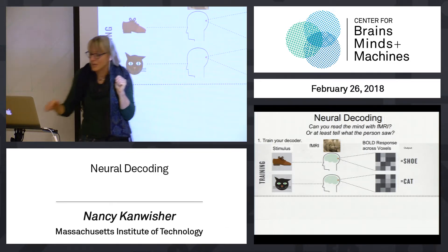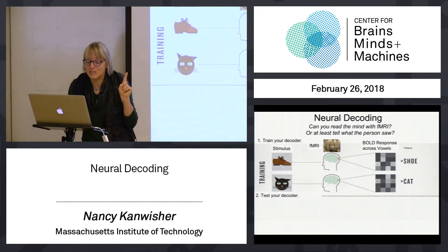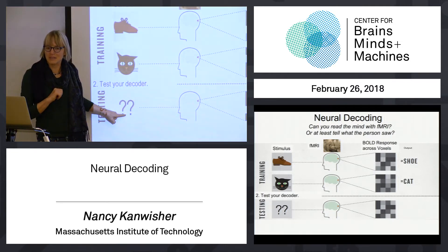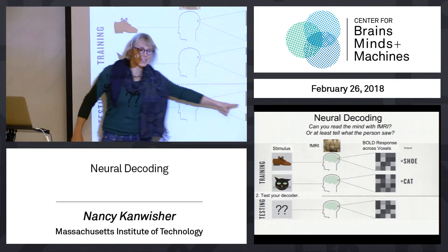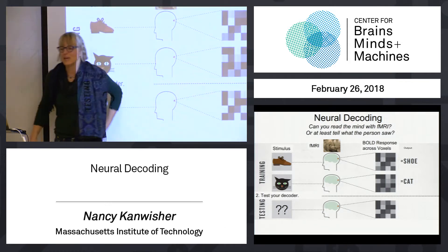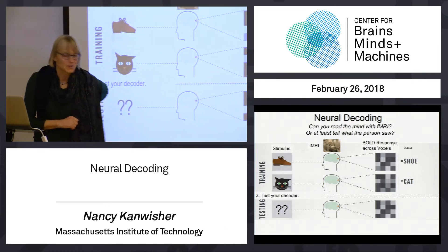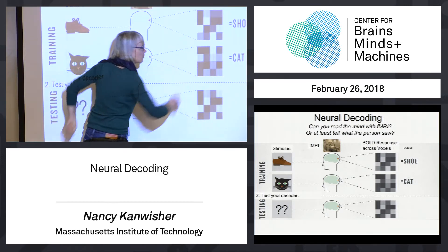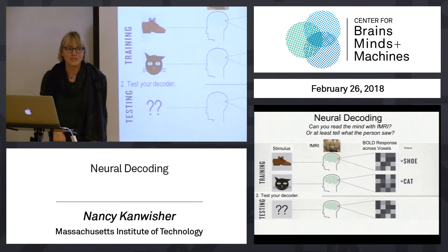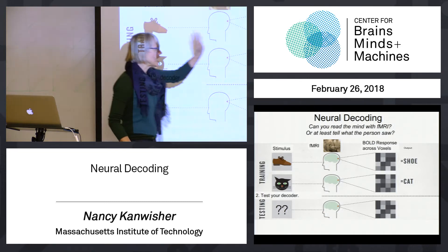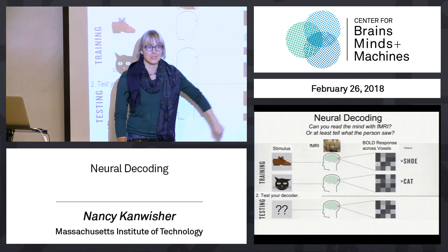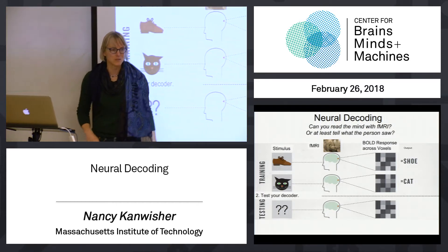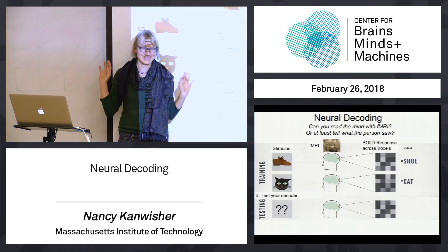Now that we've trained our decoder, we can try to read out something new — we can test it. Somebody puts in a mysterious stimulus, doesn't tell us what it is, and just gives us the brain data. We have to say: was that person looking at shoes or cats? We can do that by taking the brain pattern and asking whether it looks more like the pattern you get when there are shoes, or more like the pattern from cats. You can do that with any method — you can just correlate the patterns, or you can train fancy machine learning support vector machines, fancy classifiers.